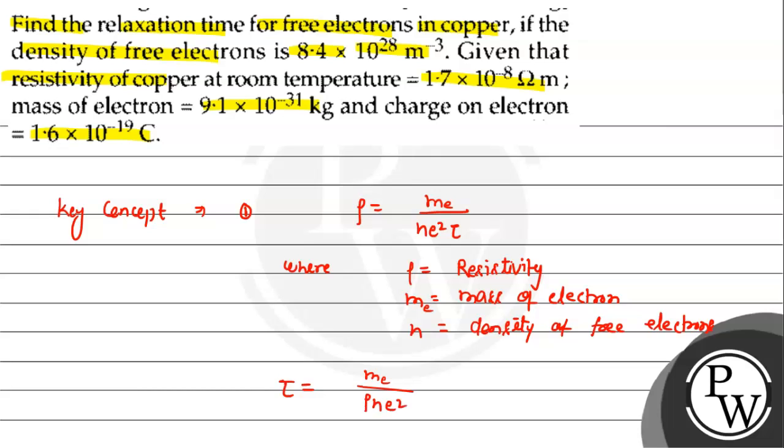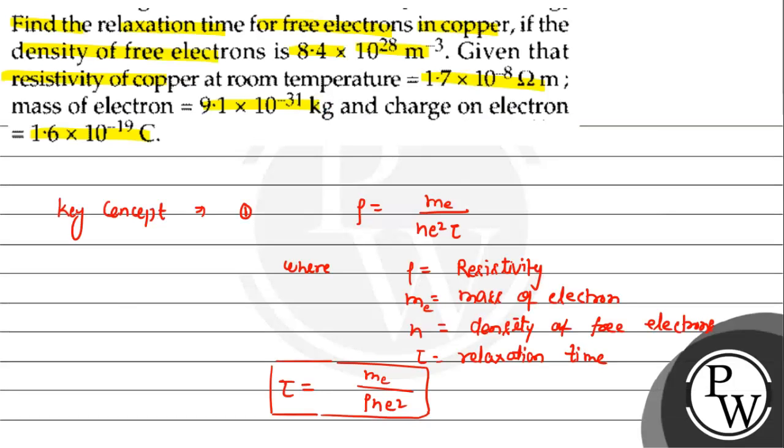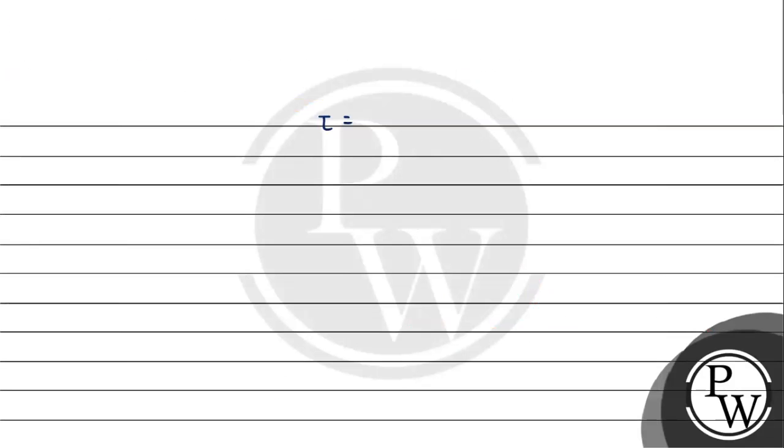Now we solve for tau. Tau is the relaxation time. We need to put in the values. Mass of electron is given as 9.1 × 10⁻³¹ kg, so we put it in.